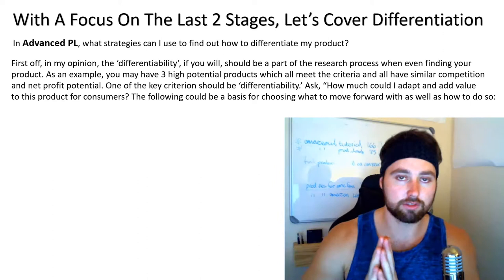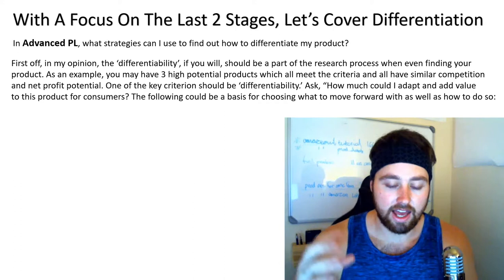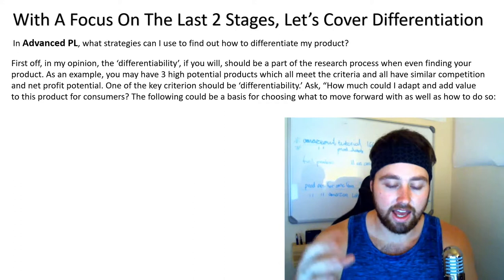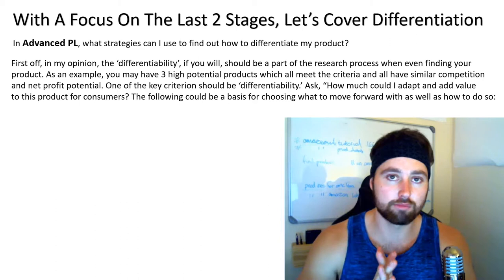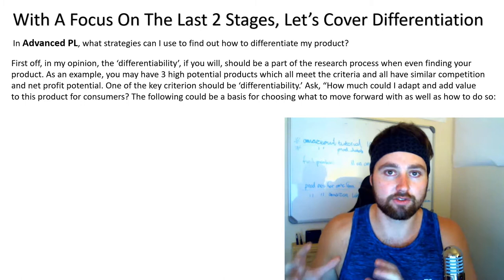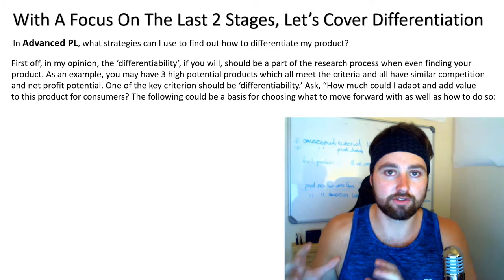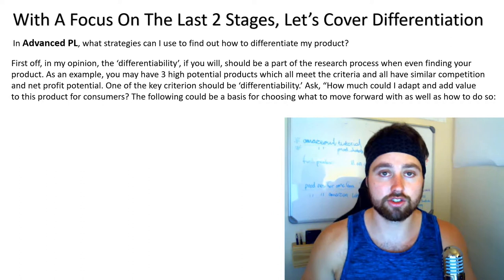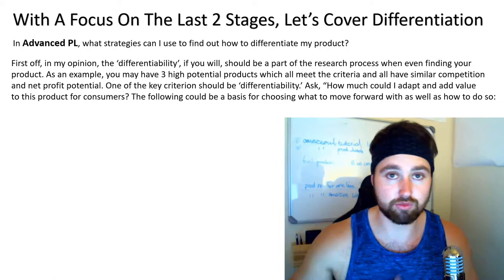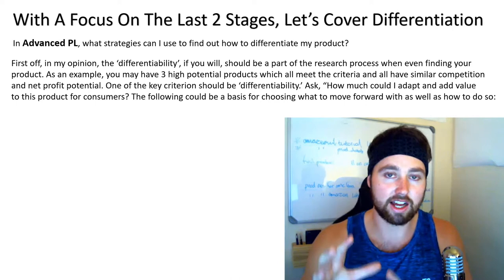With advanced private label where you're really looking to differentiate, what strategies can you use to find out how to differentiate your product? The first thing — and I've touched on this quite a lot in the product research videos — is that your differentiation research should begin in the finding stage. When you're looking for high potential products, say you had three really high potential products with very good costs, very good net profit, and very good demand, what is going to separate the best one from the other two? Very often it's going to be your differentiability — how much you can differentiate that product.